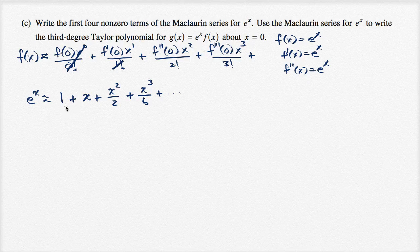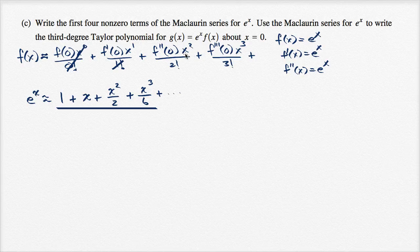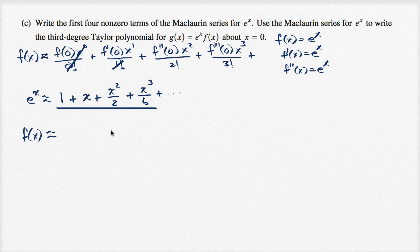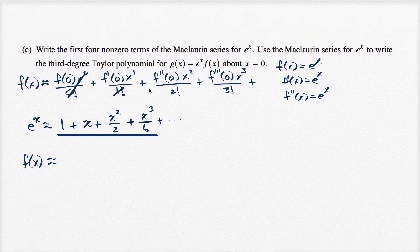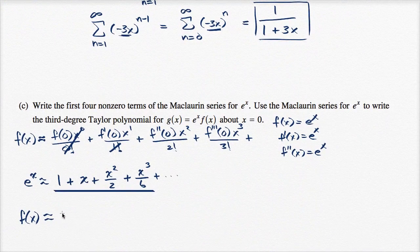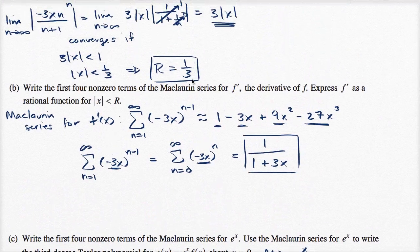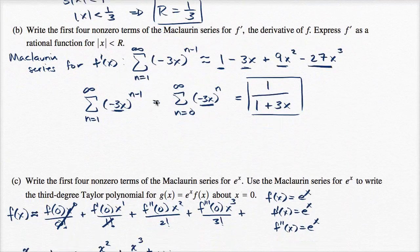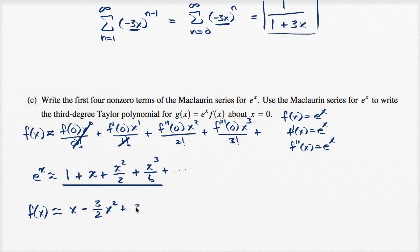Now we want to use the Maclaurin series for e to the x to write the third degree Taylor polynomial for g(x) = e^x times f(x). What I'm going to do is write the first few terms of f(x), and then think about how to multiply those two polynomials — keeping only terms up to third degree. So f(x) is approximately equal to x minus three halves x squared plus three x to the third power.